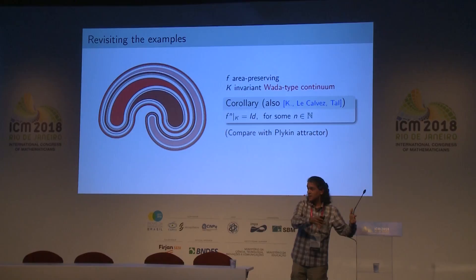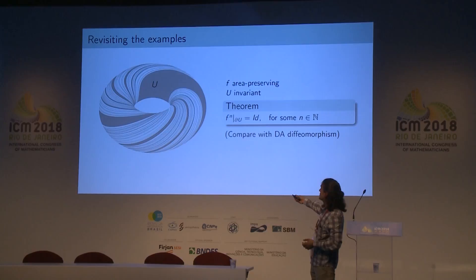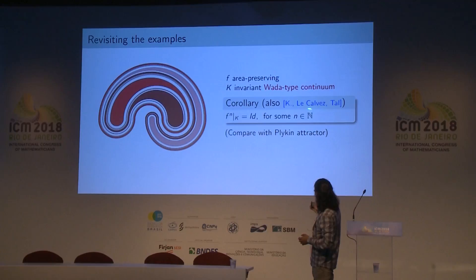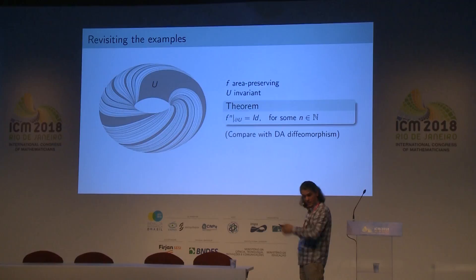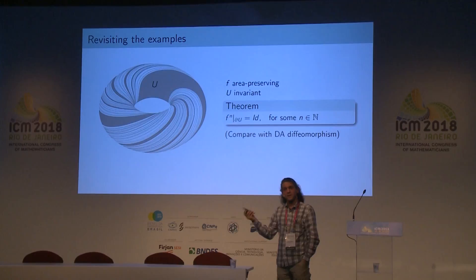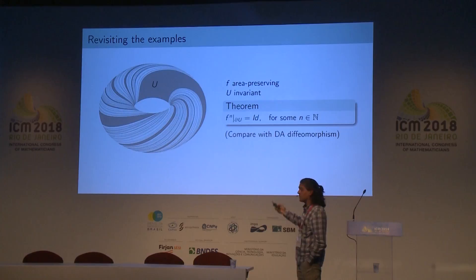Similarly in the spiraling disk example, one can show a similar result — also provable using a recent result with Patrice Le Calvez and Fabio Tal, which has a similar flavor but doesn't involve prime ends and relates to having three components in the complement of the boundary. If the spiraling disk boundary is invariant by an area-preserving diffeomorphism or homeomorphism, the boundary has to be fixed point-wise. Again, in the dissipative setting you can have very rich dynamics in contrast.